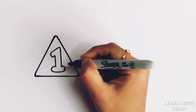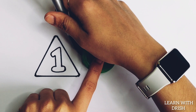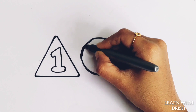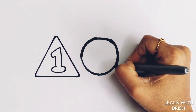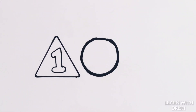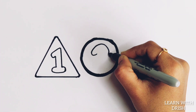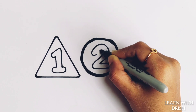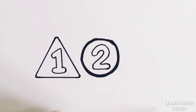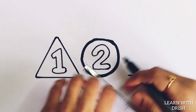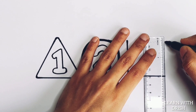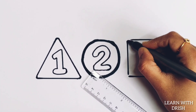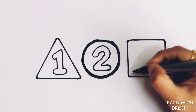Number one — circle. Number two — square.